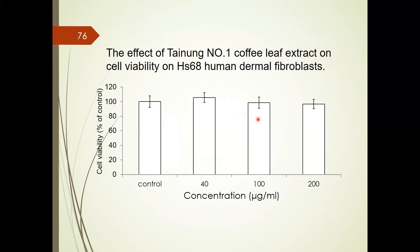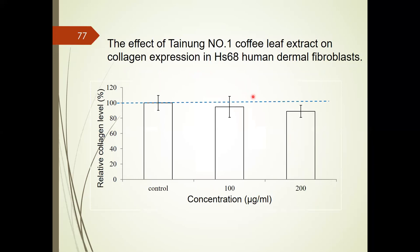We studied the cytotoxicity of Tainone No. 1 coffee leaf extract in HS68 human dermal fibroblasts. At concentrations of 40 and 200 micrograms per mL, cell viability can remain at 90%. Collagen loss is correlated to skin aging. We measured the effect of Tainone No. 1 coffee leaf extract on collagen levels of human dermal fibroblasts and found a slightly inhibitory effect on collagen expression.